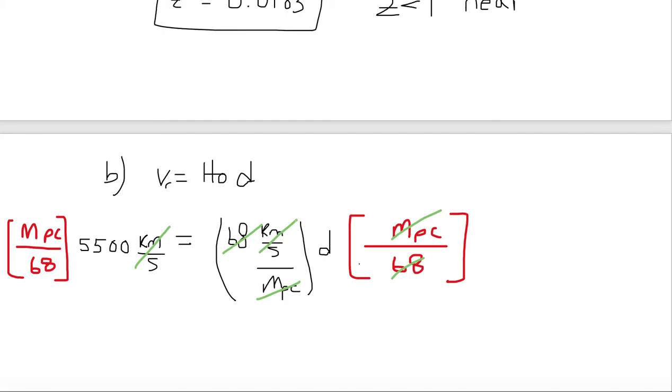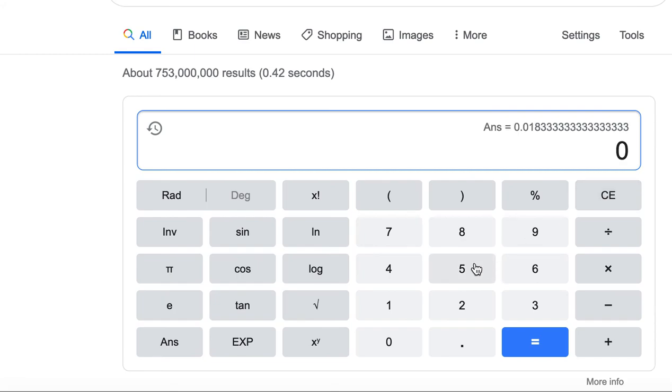And we are left with just units of megaparsecs on the left-hand side. The only thing left on the right-hand side is d. And we have 1 megaparsec multiplied by 5,500 divided by 68. So we can just put a megaparsec as our letters. And then our numbers are going to be 5,500 divided by 68. So we go back to our calculator, put in 5,500, we divide it by 68, and we get a value of 80.8.